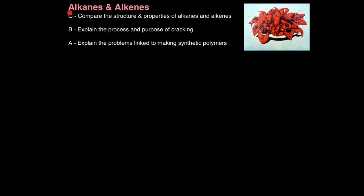In this chemistry lesson, we're going to look at alkanes and alkenes. The first aim is to compare the structure and properties of alkanes and alkenes, then explain the process and purpose of cracking, and finally explain the problems linked to making synthetic polymers, which you may think of as plastics.